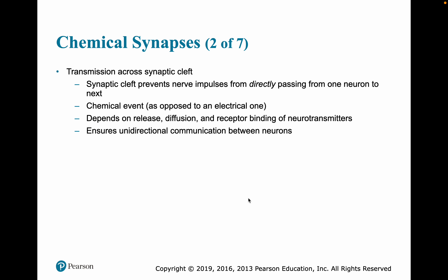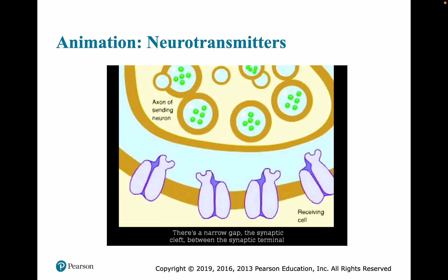Transmission across the synaptic cleft doesn't go directly — it's a chemical event involving diffusion, release rate, and receptor binding. This gives us unidirectional communication between neurons. There is a narrow gap, the synaptic cleft, between the synaptic terminal of a sending neuron and the surface of a receiving cell.